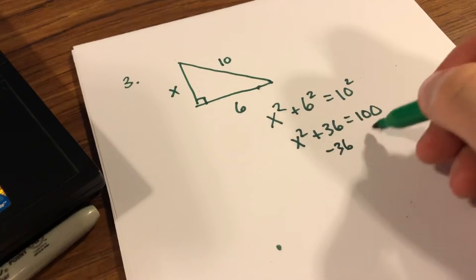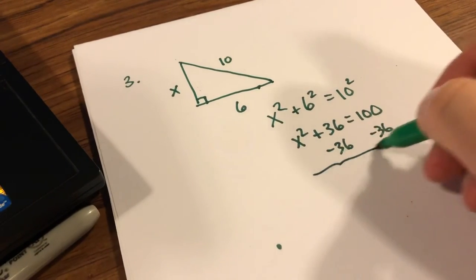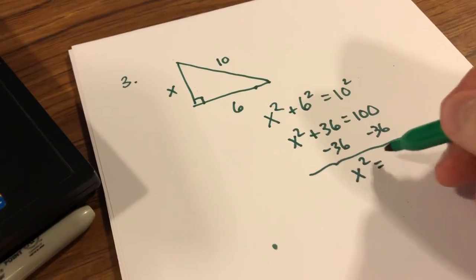If I subtract 36 from each side, I get x squared is equal to 64.